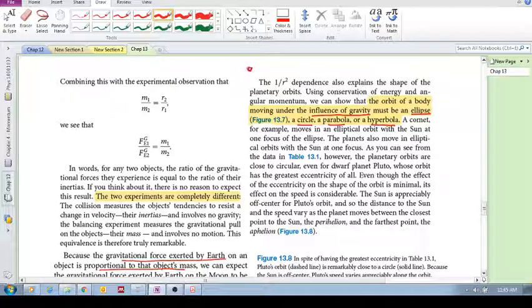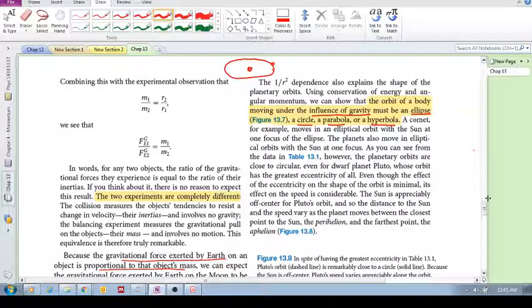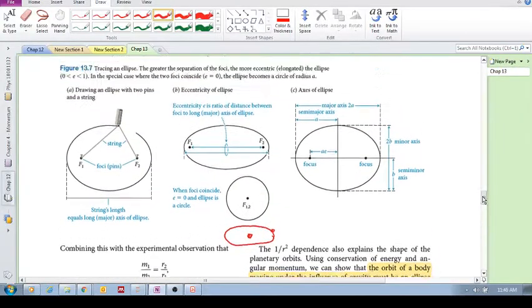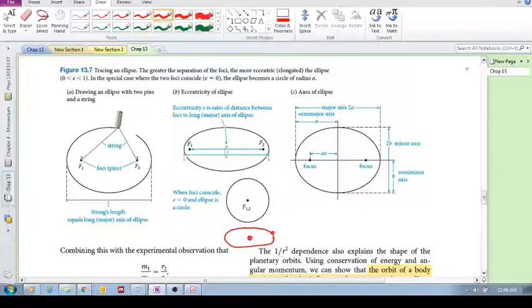So if you've got an object and another object is revolving around that object, the way that this object interacts is either an ellipse, a circle, a parabola, or a hyperbola. Let's have a quick look at an ellipse and a circle. Here's a basic description of how it works.